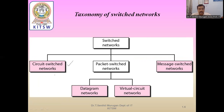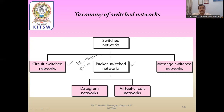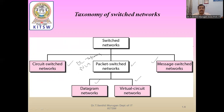The switching network can be classified into three categories. First, at the physical layer, circuit switching is used — electromagnetic signals are sent from source to destination. Second, packet switching is used in the data link layer, where packets are called frames, and also in the network layer, where packets are transmitted. Packet switching is further classified into datagram network and virtual circuit network. Third, at the application layer, there is a message switching network, where messages are switched from one node to another.